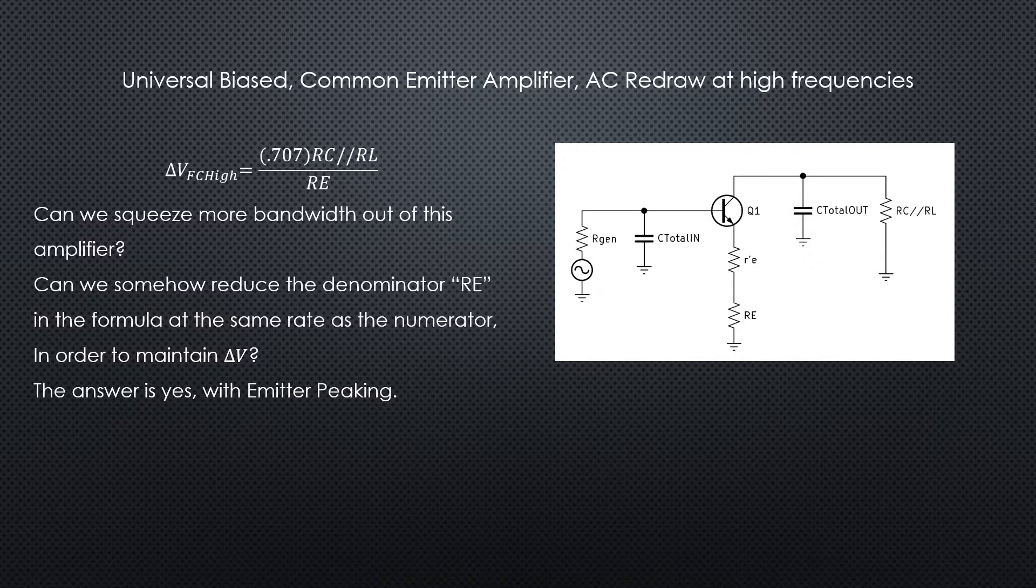It's factoring back out, keeping our voltage gain the same. And that's what emitter peaking is attempting to do.